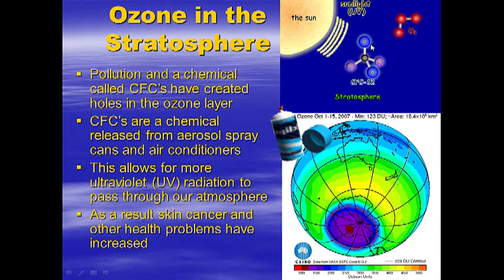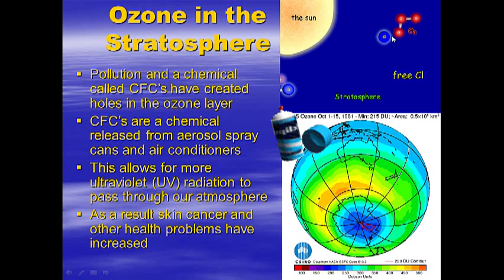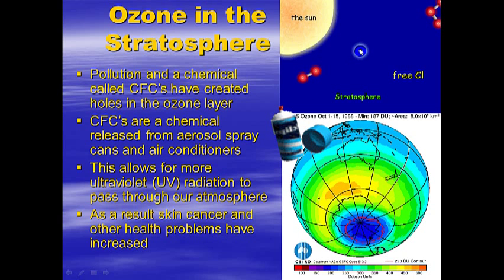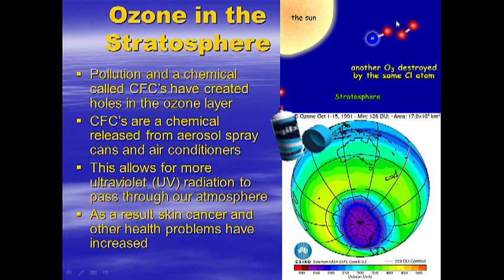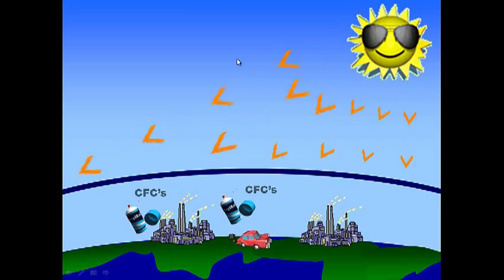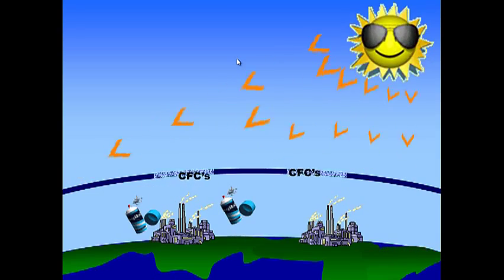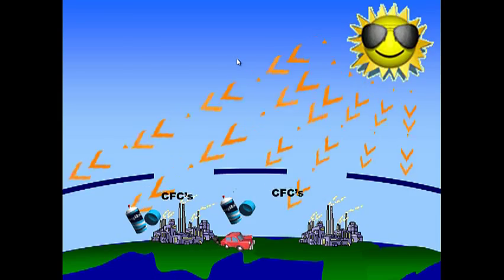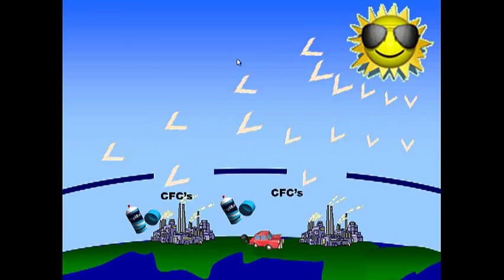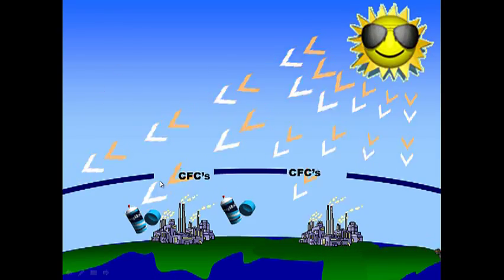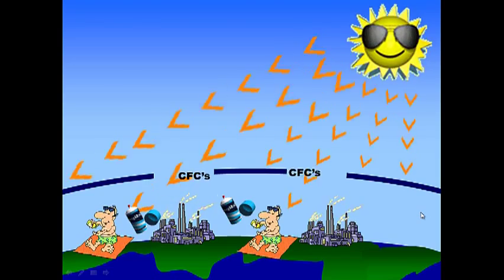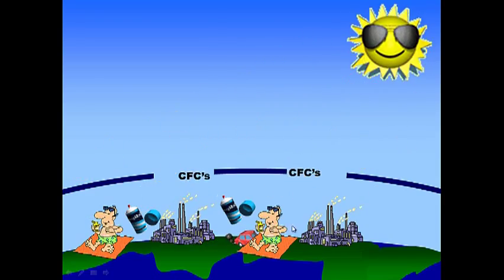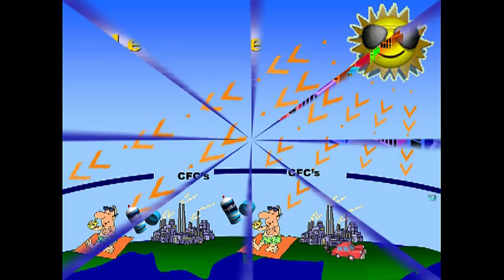Sunlight breaks CFCs down, and the released chlorine rips apart ozone (O3) molecules. These ozone molecules are important because they absorb UV radiation — they're like our force field protecting us from highly dangerous ultraviolet radiation. Once the chlorine is freed, it remains in the ozone layer and continues to break apart O3 molecules. CFCs from cars, pollution, aerosol cans, and air conditioning units all contribute to this destruction, resulting in more sunburns, skin cancer, and other health problems.